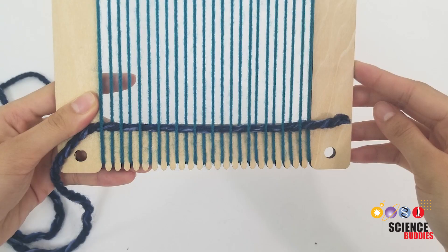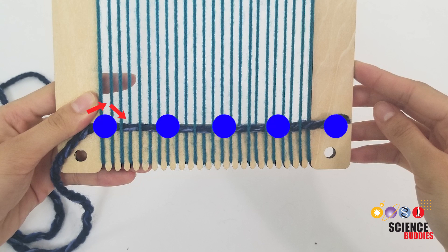For the weave, we'll be doing a plain weave, but you can definitely do more advanced weaving techniques. The plain weave is the basic up, down, over, under sequence.